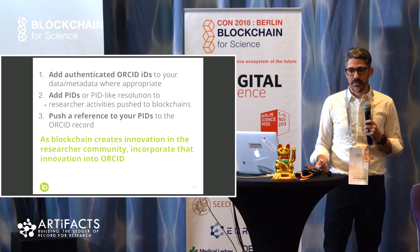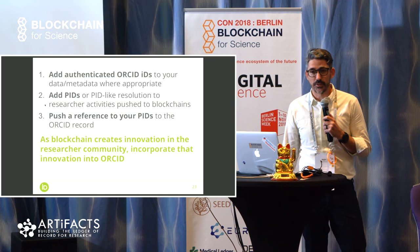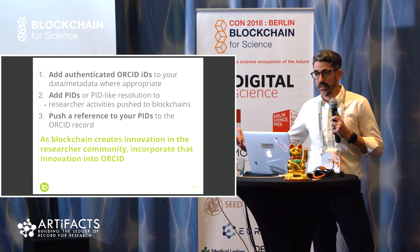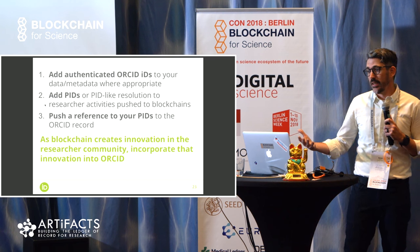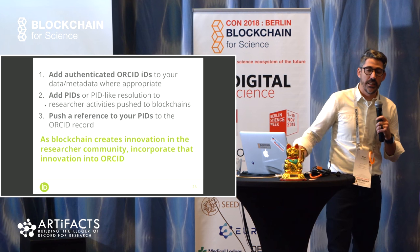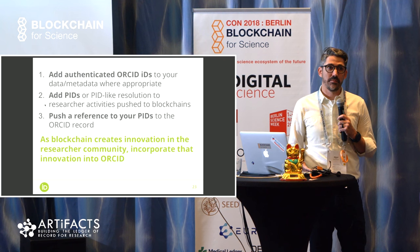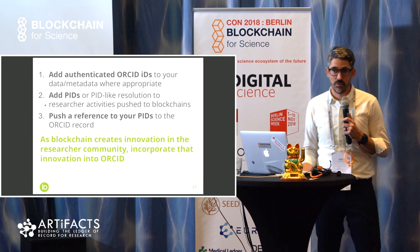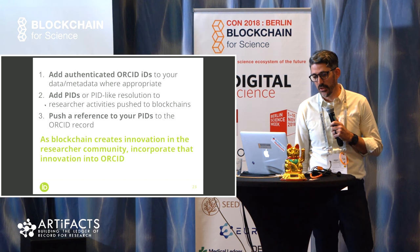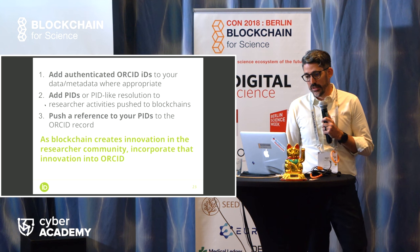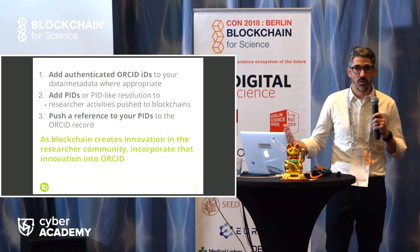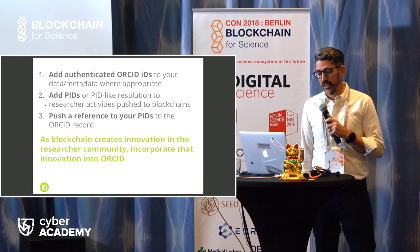And then finally, if you want all the gold stars: push references to your PIDs to the ORCID record. If you've developed a blockchain and you're pushing stuff to the blockchain, and you have a way of resolving it via a link that is PID or PID-like, push it to the ORCID record. That makes it easier for the researcher to find it, easier for other systems to resolve the ID and get metadata about the researcher. Maybe follow that PID to the source, which probably has information with the granularity you need for what you're describing on the blockchain. As you're out there creating innovation in the researcher community, we just ask you to consider the ways you can interface with ORCID, collaborate with us, and help the whole community disambiguate and attribute researchers correctly.